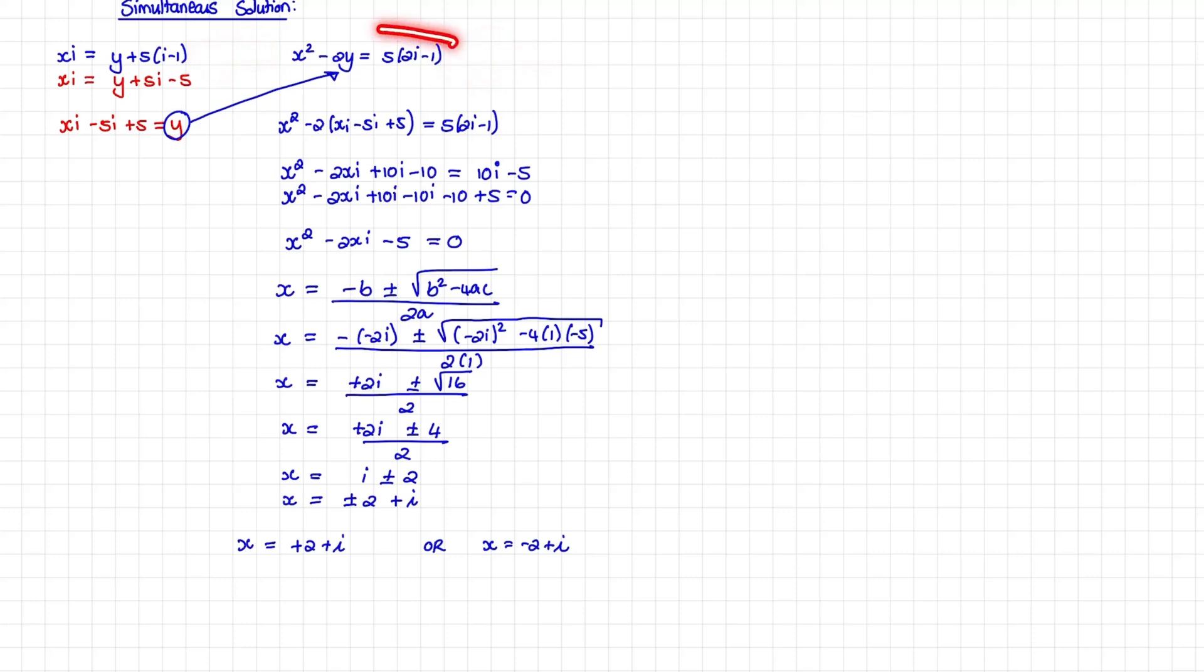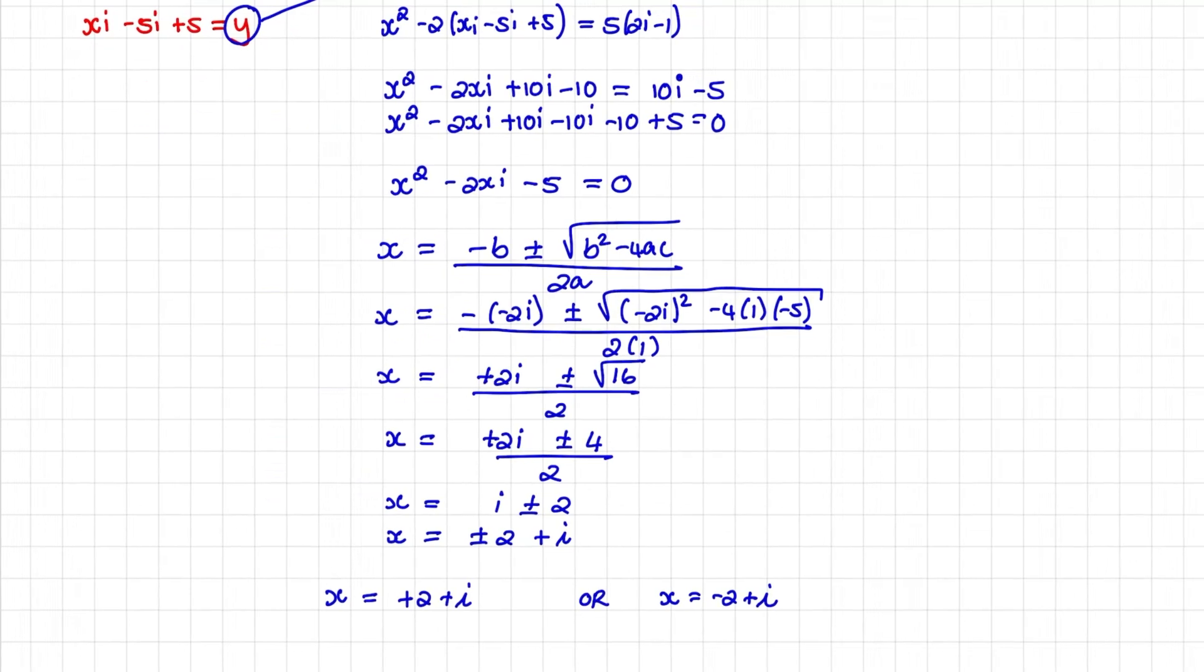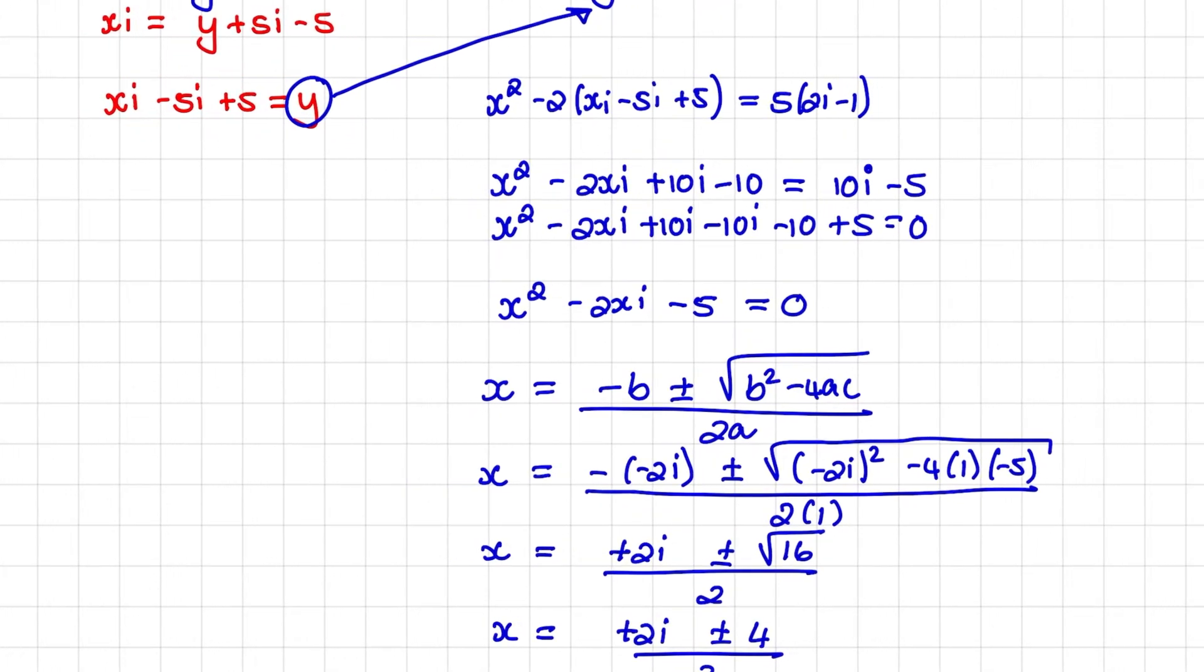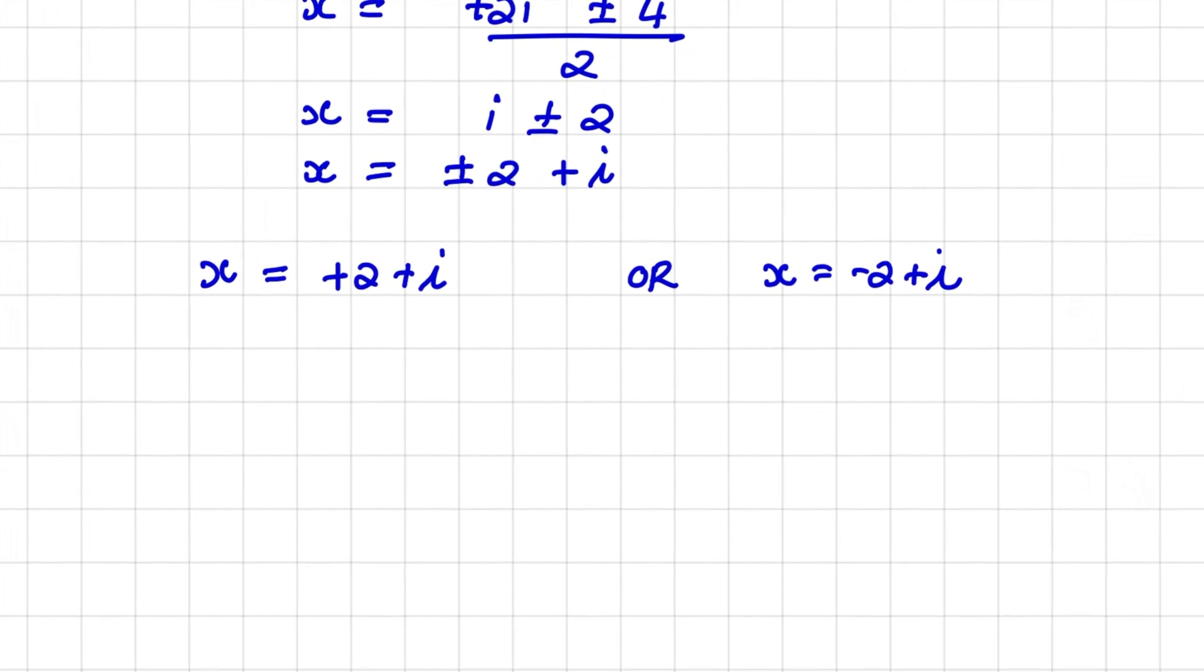Now we can find the values for y. And what we will do is focus on this equation where y was equal to xi minus 5i plus 5. When I use that value for y, I have y is equals to xi, which is 2 plus i, i minus 5i plus 5.